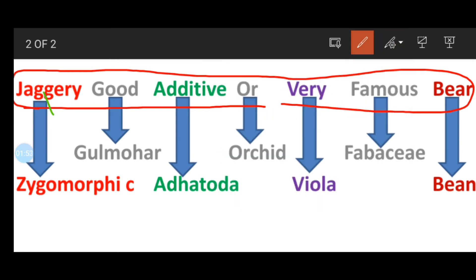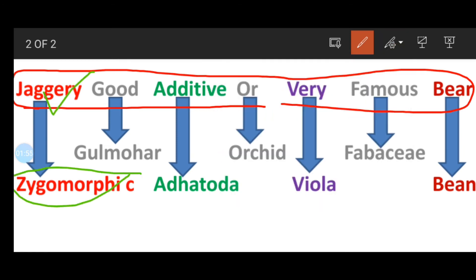So Jaggery stands for zygomorphic. Good means Gulmohar. Additive means Adhatoda. Or means orchid. Very means Viola. Famous that is Fabaceae and bean that is bean.